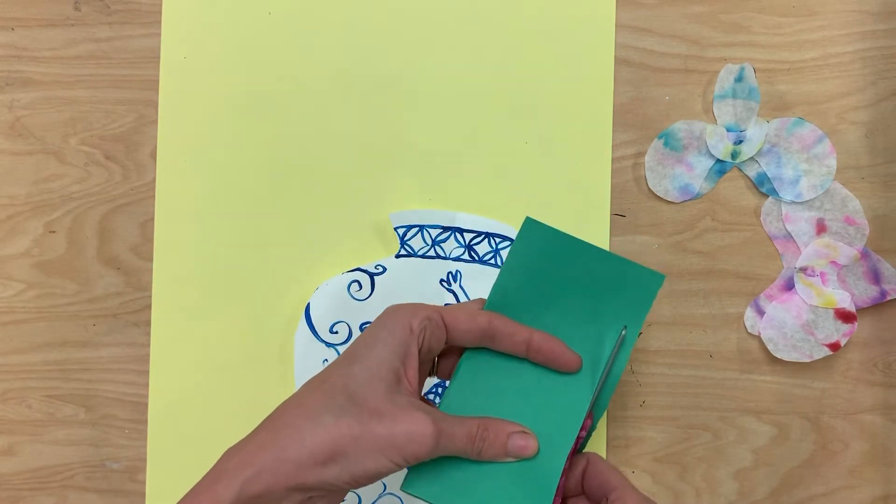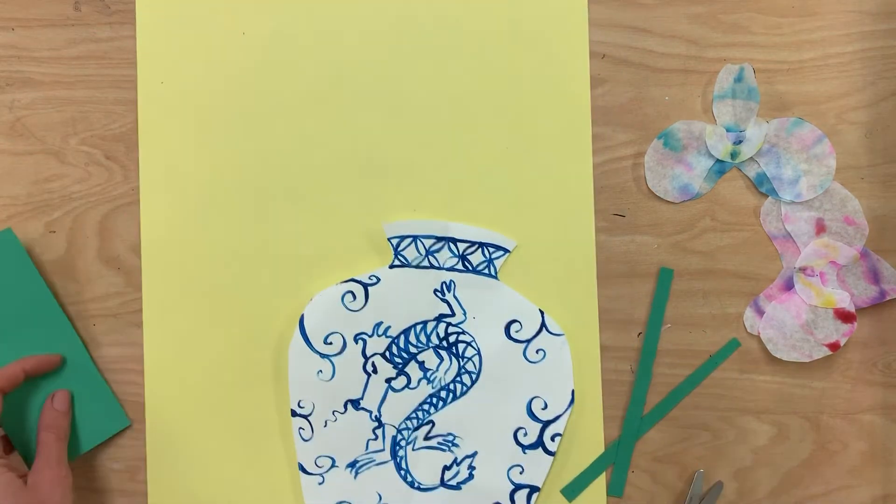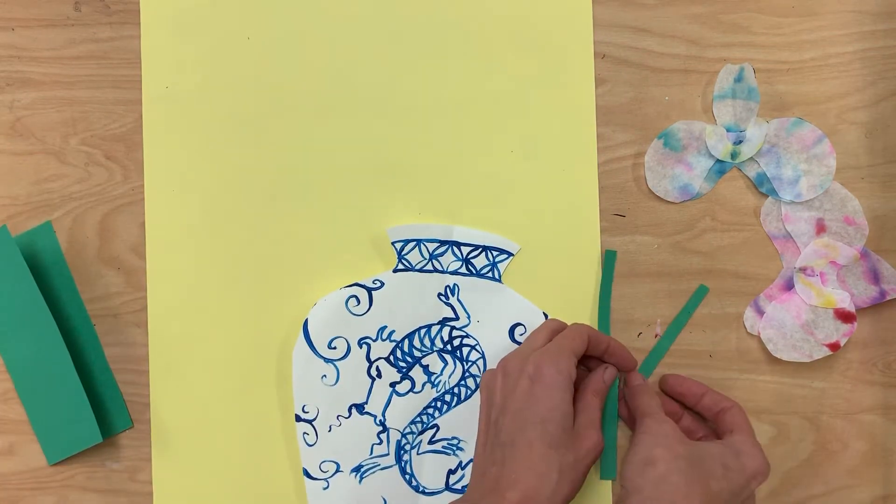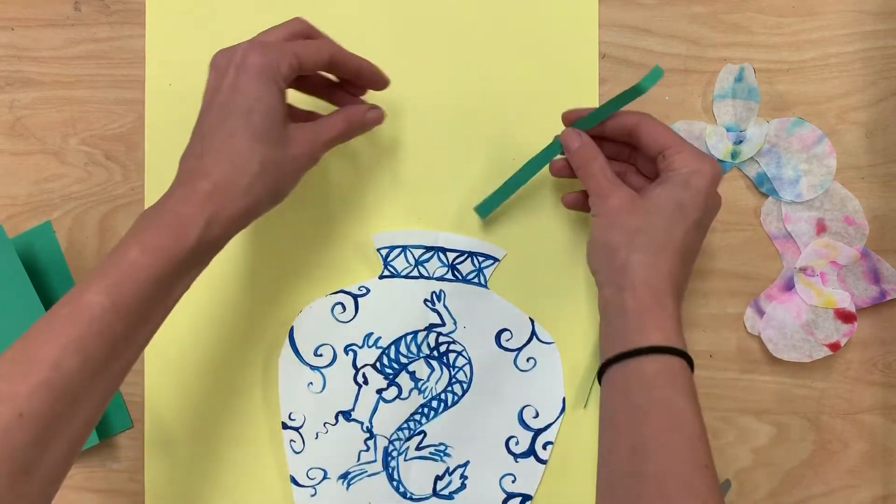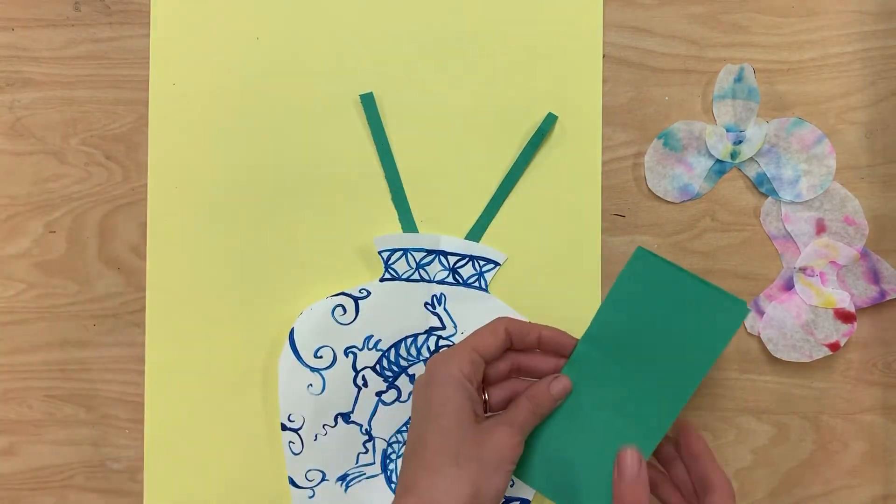And when I cut it while it's folded, it's going to create two identical pieces. So I can use both of those for little stems. So once I put them in here, or in my little vase, it will be able to stick out like that. But I also need to create two leaves.